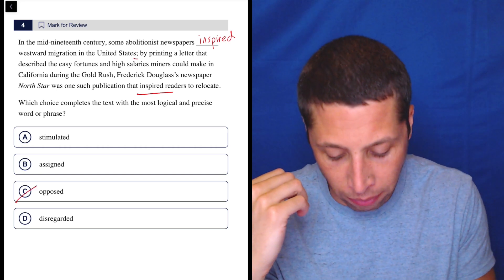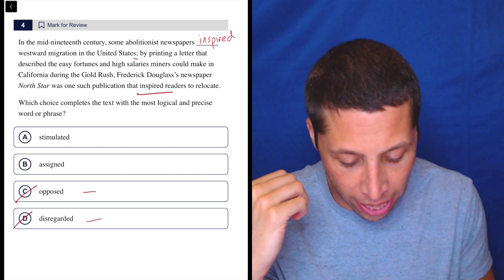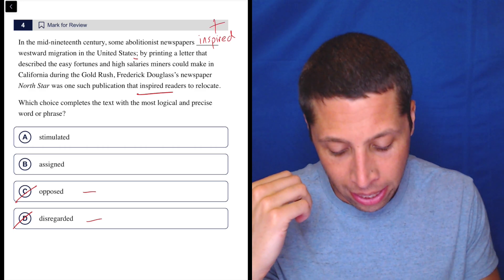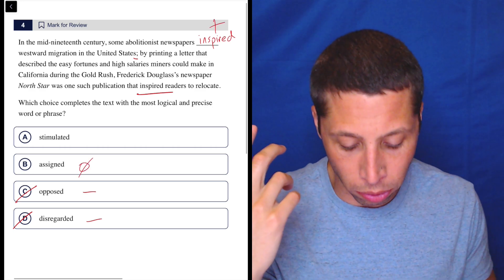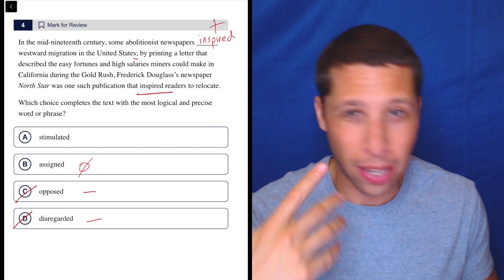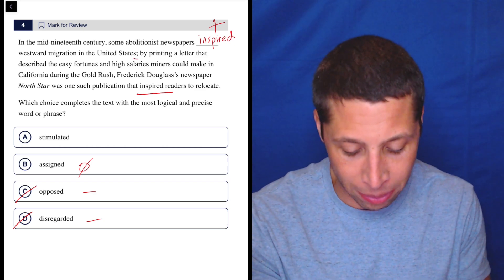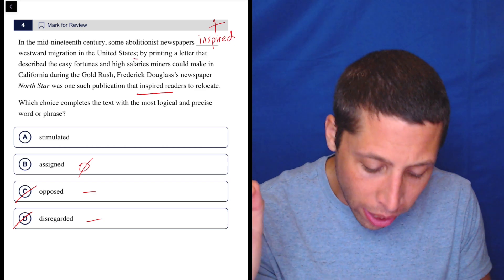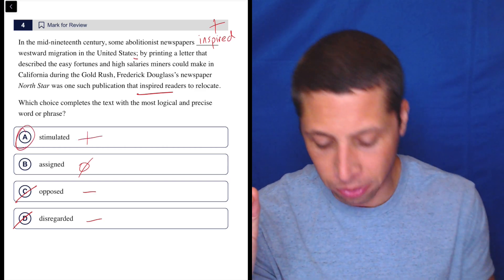So opposed, obviously wrong. Disregarding's definitely negative. We need something positive. Assigned is more neutral, right? Like your teacher assigns you something. It just means do this. It doesn't have to be positive or negative, but stimulated is also kind of neutral, but positive enough to pick.